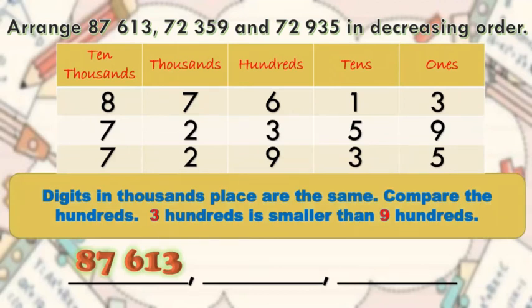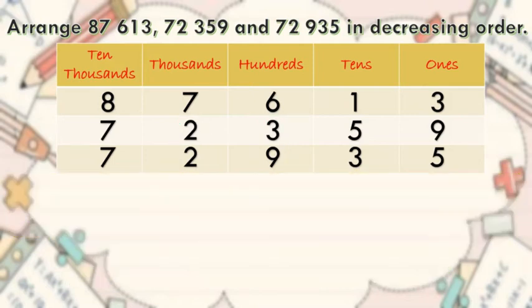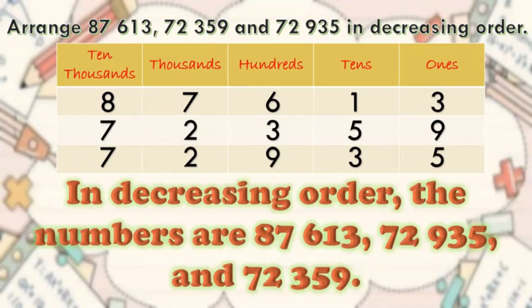Now, digits in the thousands place are the same. Let's move on to the hundreds place. Three hundreds is smaller than nine hundreds. Therefore, 72,359 is the smallest number, and the number in the middle is 72,935. In decreasing order, the numbers are 87,613, 72,935, and 72,359.